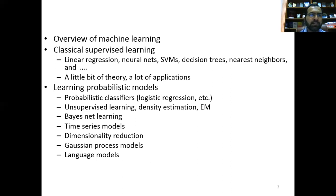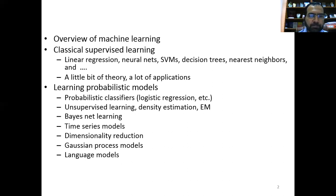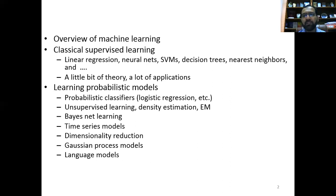One way of modeling a situation is through time series problems or time series applications, where we have data based on time — for example, a price index represented as time series data. We also talk about dimensionality reduction: how to reduce dimensions when dealing with complex situations, so we can proceed with or comprehend the problem. Then we talk about Gaussian models and language models.